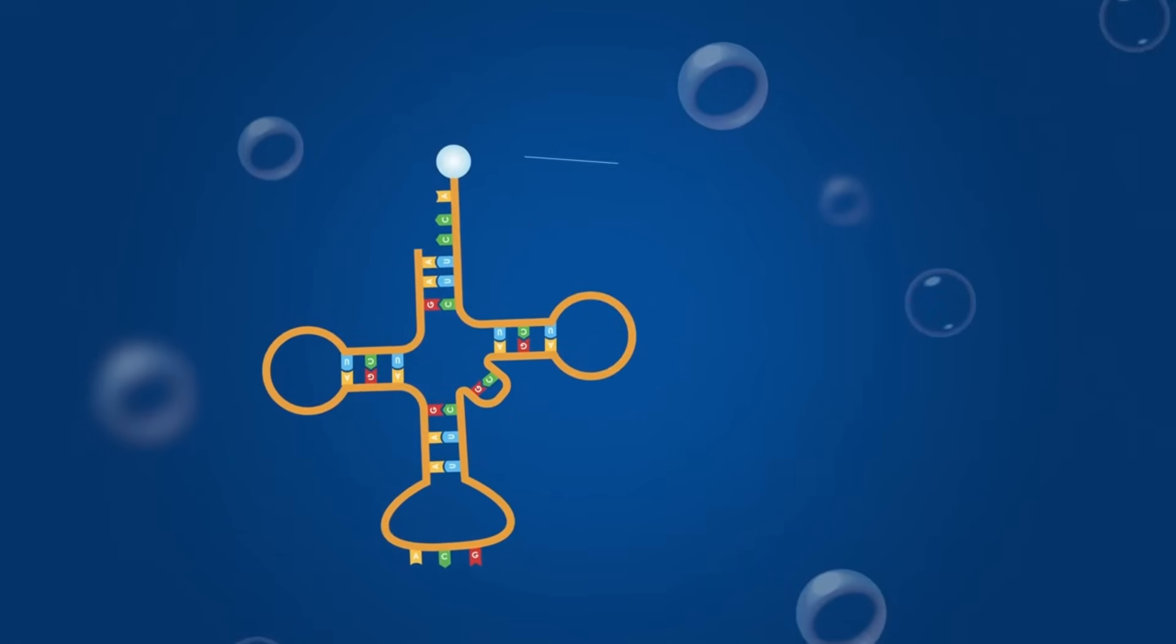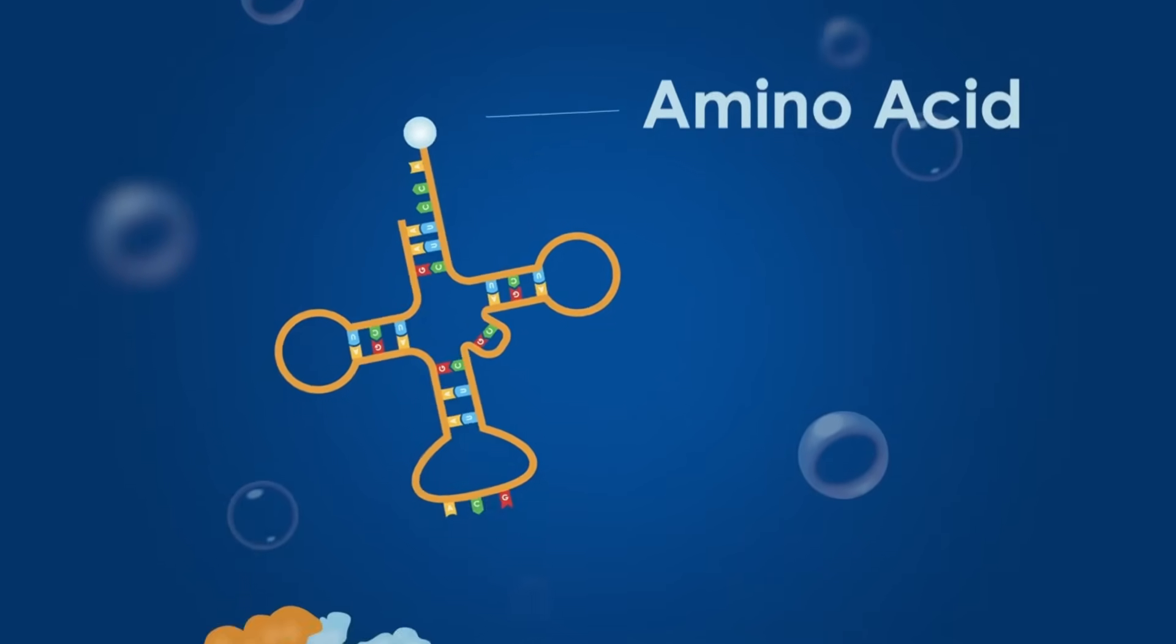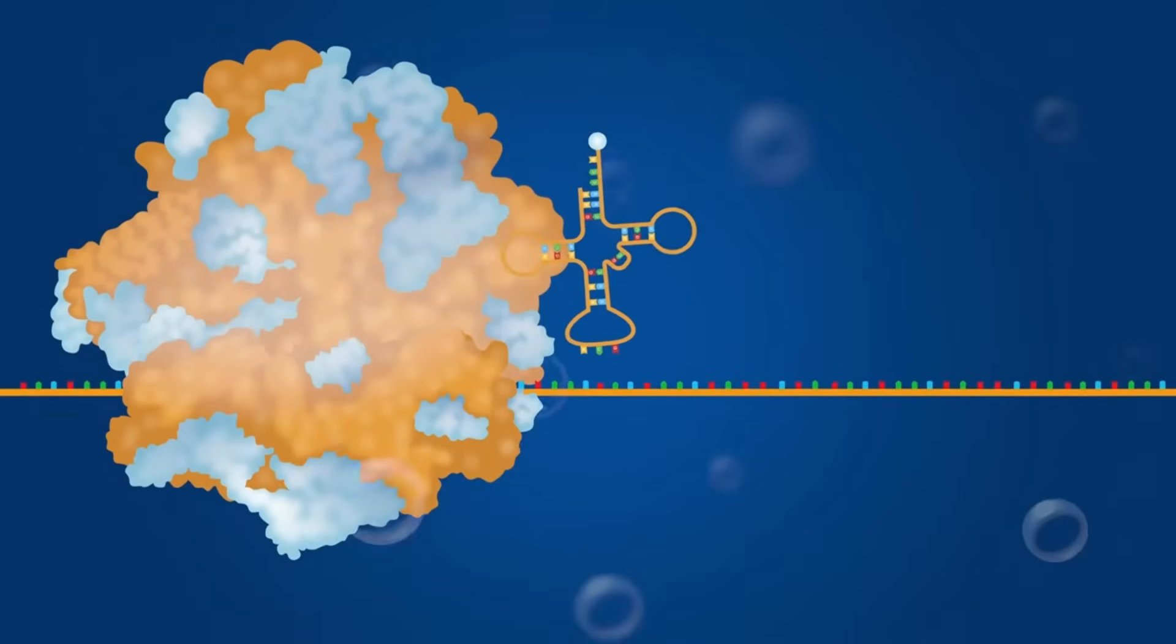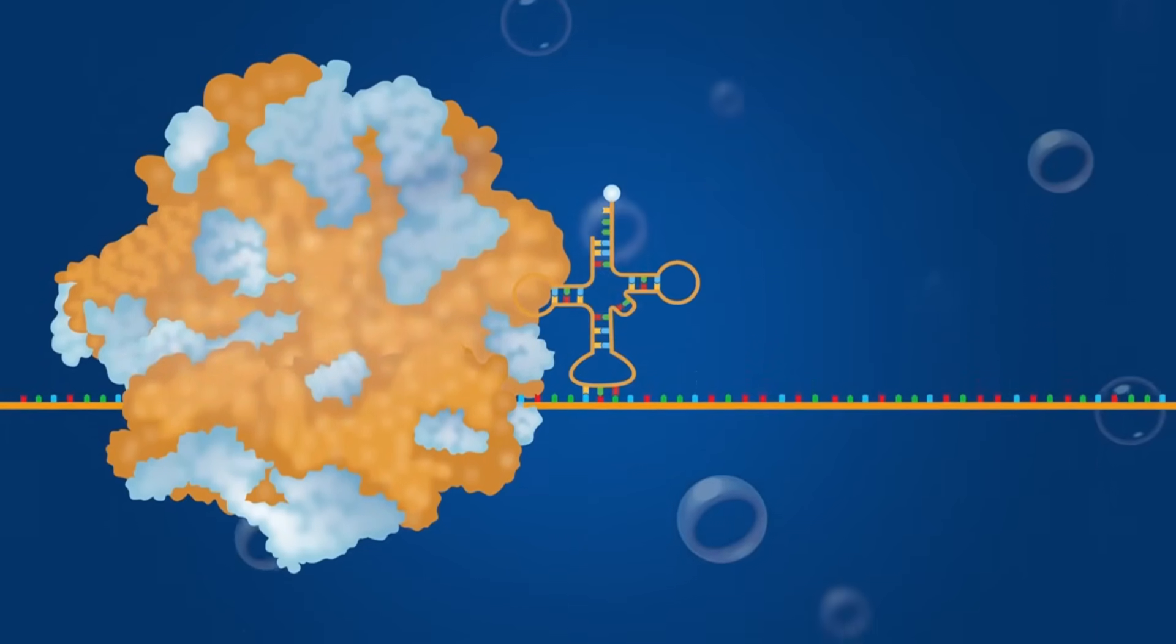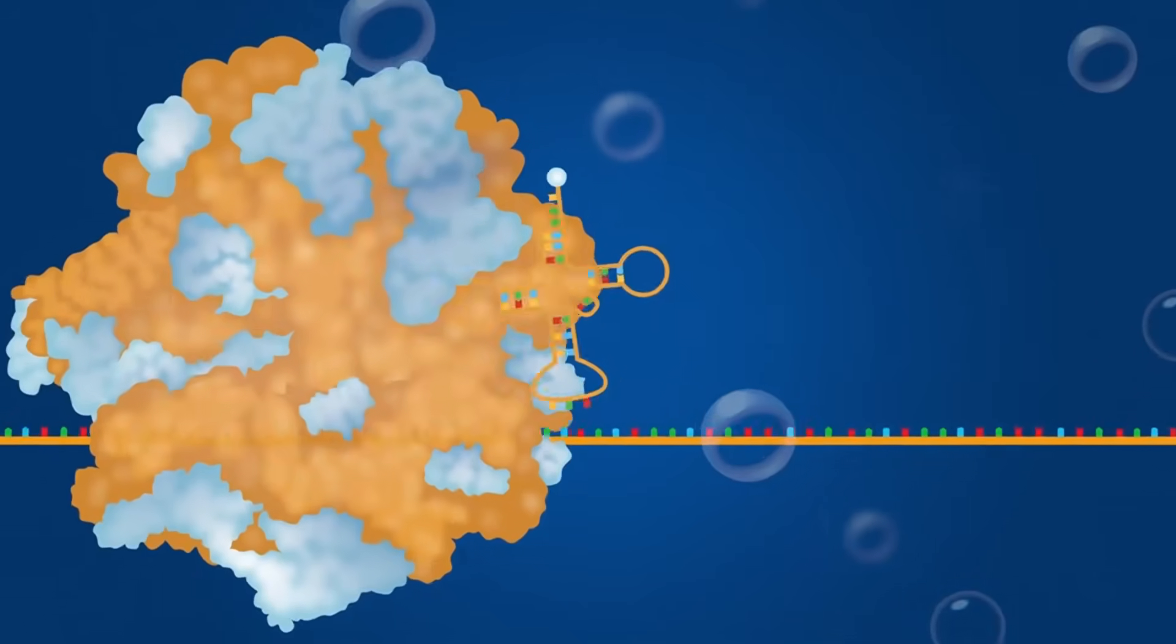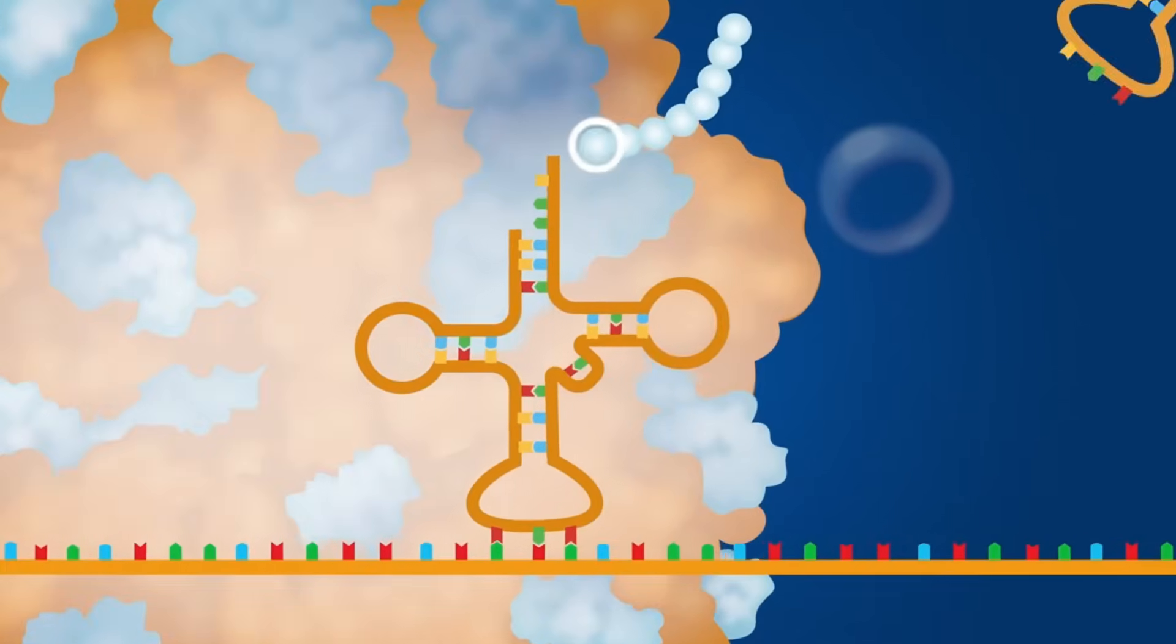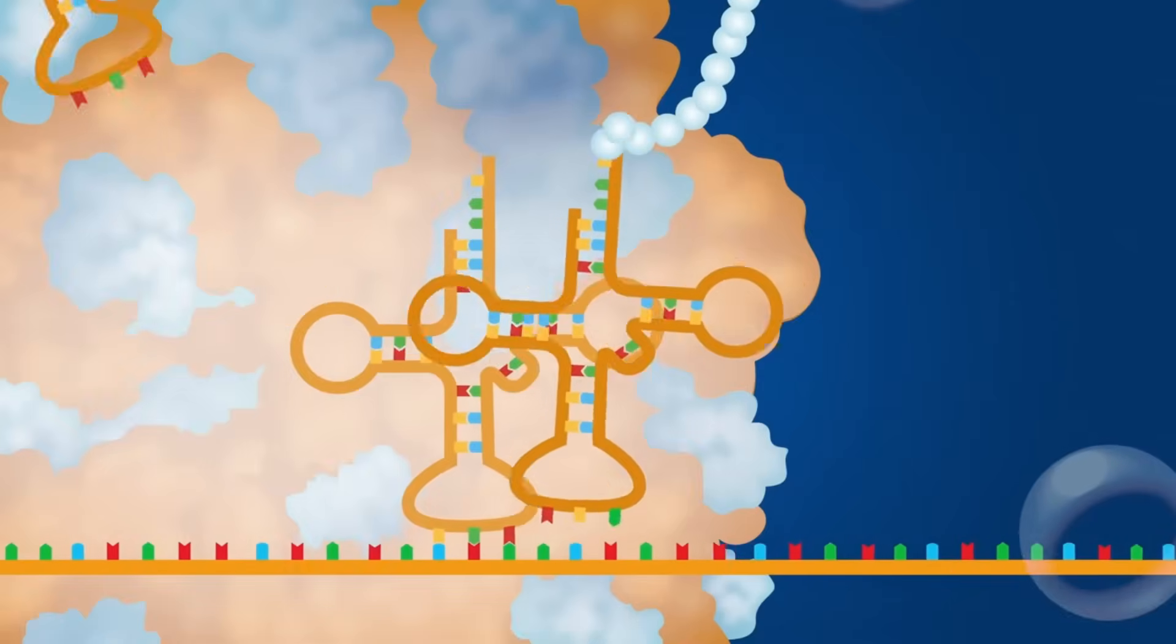During translation, transfer RNA reads the genetic code carried by the messenger RNA and lines up the right amino acids to make the protein, while ribosomal RNA triggers the reaction to join the amino acids together using peptide bonds.